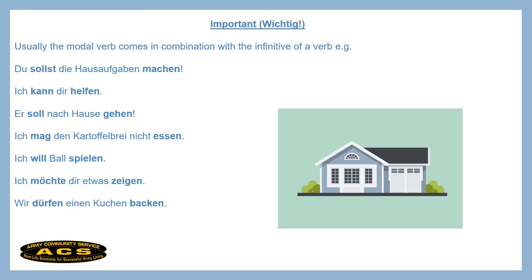'Mag' comes from the modal verb 'mögen' — it's conjugated, while 'essen' is not. 'Ich will bald spielen' — I want to play soon. 'Ich möchte dir etwas zeigen.' Here we have 'möchten' — that's debatable as a modal verb, but most people use it frequently. For example, if you go to a restaurant and want to say 'I would like to order something,' you would say: 'Ich möchte etwas bestellen.'